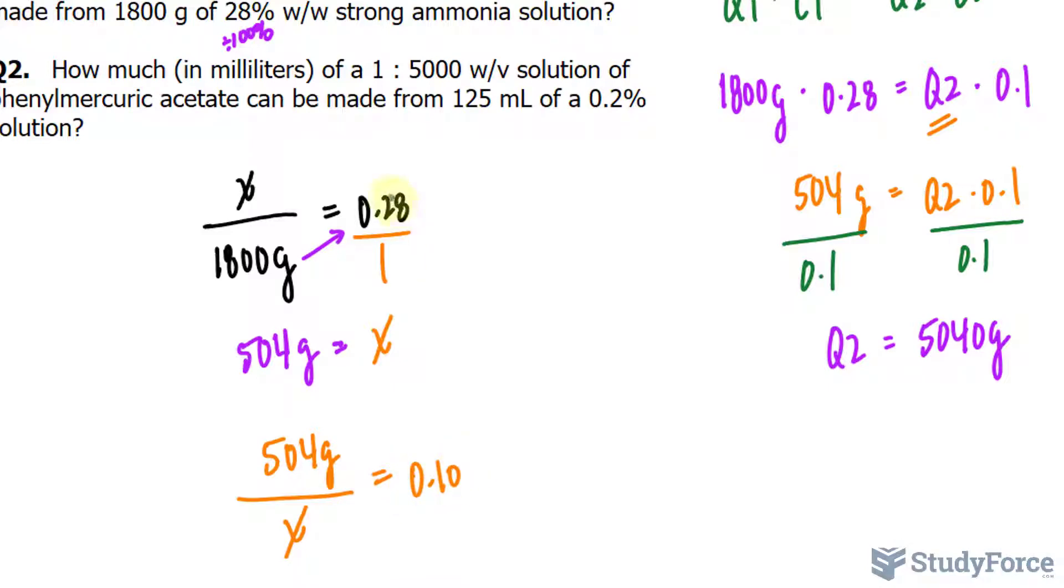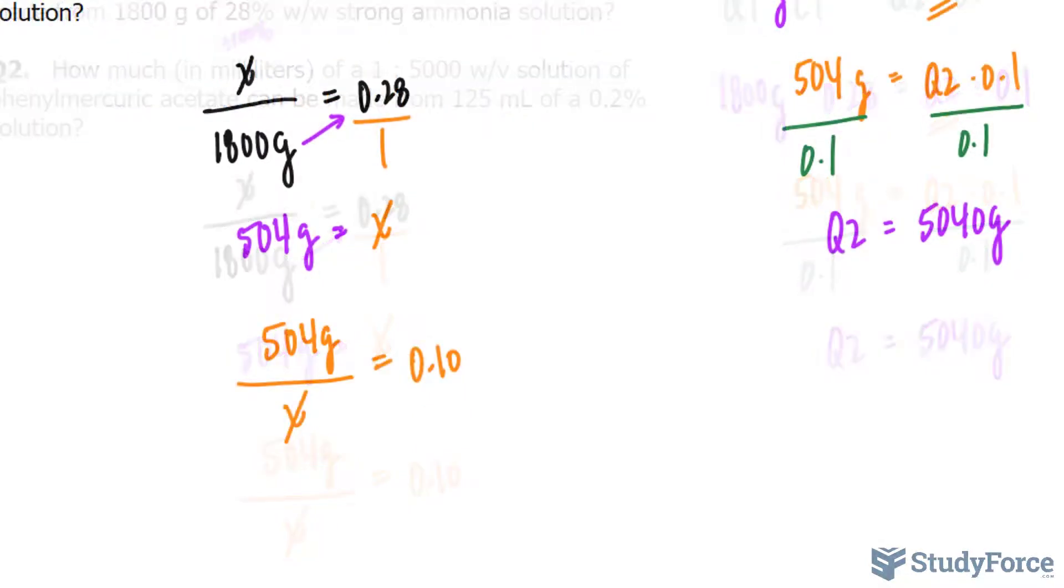It's getting diluted. It's going from being 28% to 10%. So expect X to be greater than 1,800.